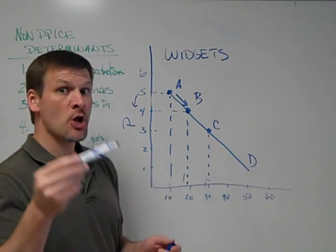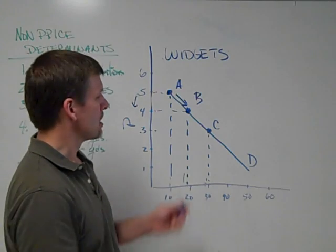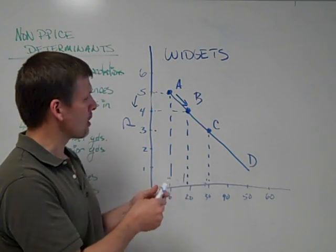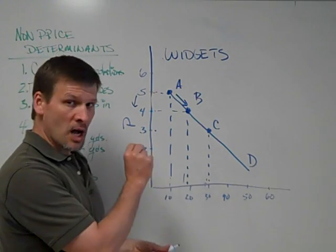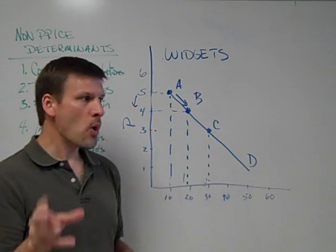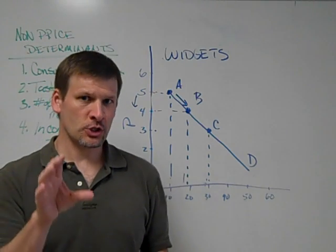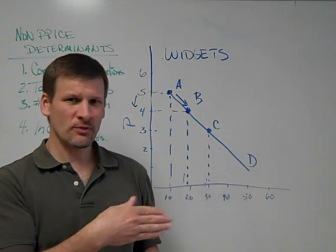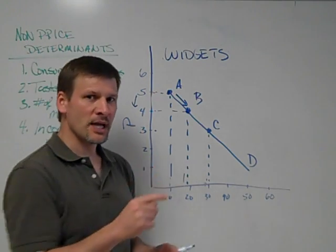So a change in price here produced a movement down the demand curve and increased the quantity demanded. Change in price, change in quantity demanded. So built into every demand curve are combinations of price and quantity. So if you have questions where price changes, don't shift the curves. Just move up and down the demand curve.